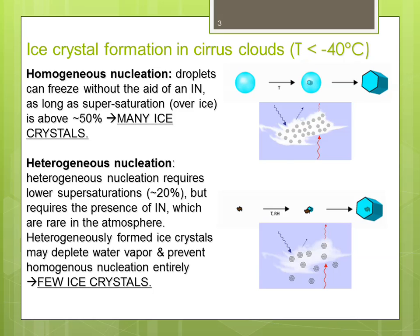Quite a few of the cirrus clouds that form in the current atmosphere are actually formed by homogeneous ice nucleation and therefore look like the top image here. The idea then is that we could introduce artificial ice nuclei and that way convert the clouds from looking like the top schematic to the bottom schematic.